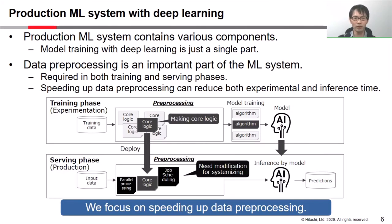Let's talk about production machine learning systems with deep learning. Production machine learning systems contain various components such as data preprocessing, model training, serving, and model monitoring. Model training with deep learning is just a single part. Data preprocessing is an important part of the machine learning system.